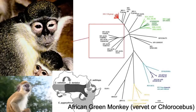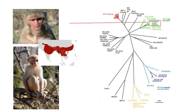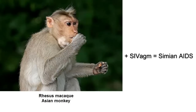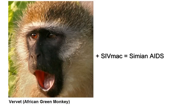For example, the simian immunodeficiency virus strain that infects African green monkeys doesn't usually cause much disease to its host. The rhesus macaque also has a strain of SIV that causes little or no disease. However, if you take a rhesus macaque — a monkey from Asia — and infect it with the SIV from the African monkey, or if you infect the African monkey with the Asian virus, the result is called simian AIDS, and it parallels what we see in humans.